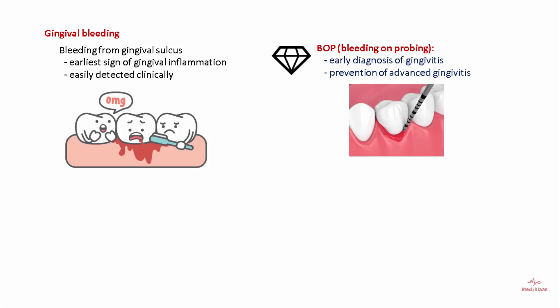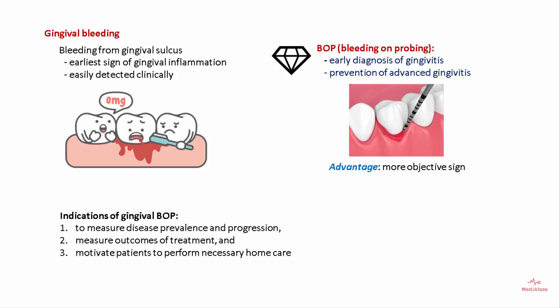Bleeding on probing (BOP) aids in prevention of advanced gingivitis. The advantage of BOP is that it is a more objective sign for identifying the presence of gingival inflammation. It is used to measure disease prevalence and progression, helps measure treatment outcomes, and motivates patients to perform necessary home care. The absence of gingival bleeding on probing is a desirable outcome, and low risk of future attachment loss can be predicted.